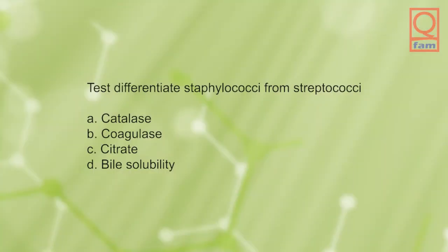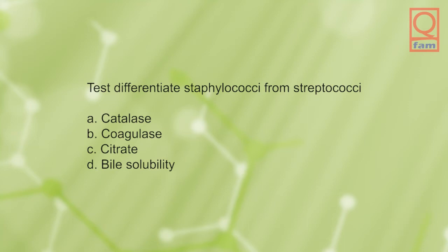Test to differentiate staphylococci from streptococci: A) catalase, B) coagulase, C) citrate, D) bile solubility. The answer is A, catalase.